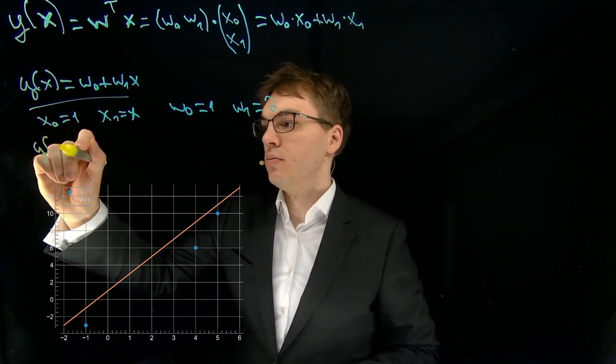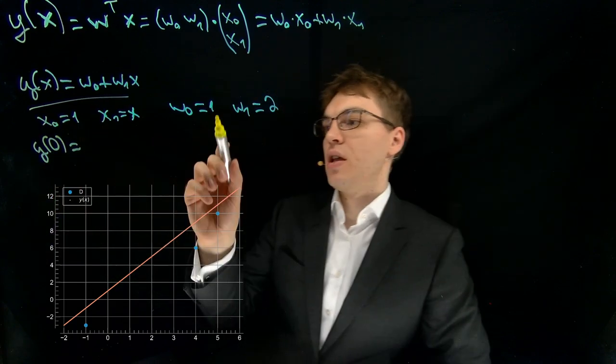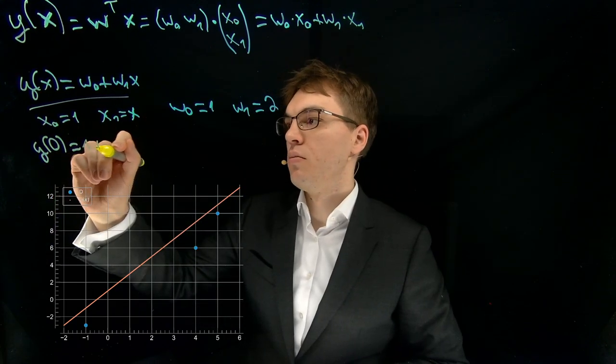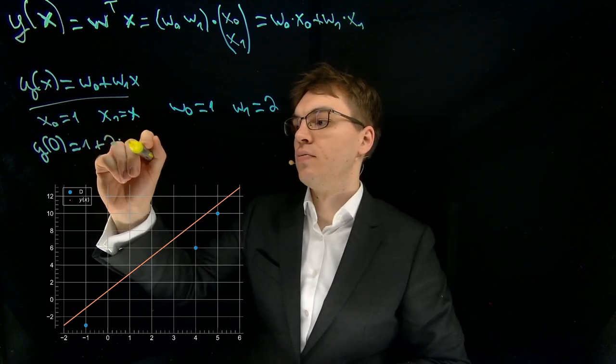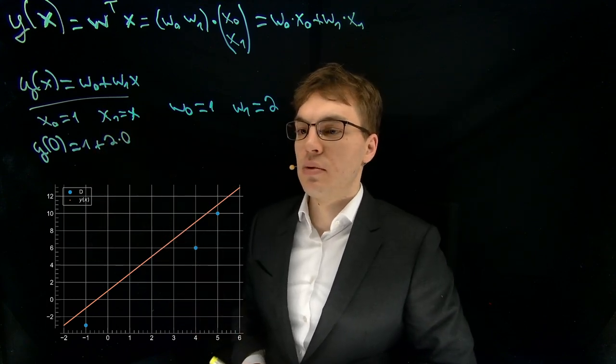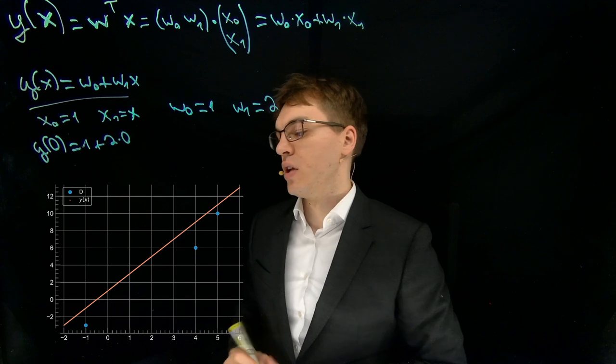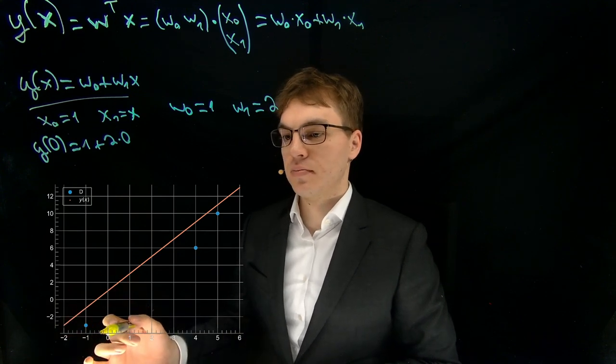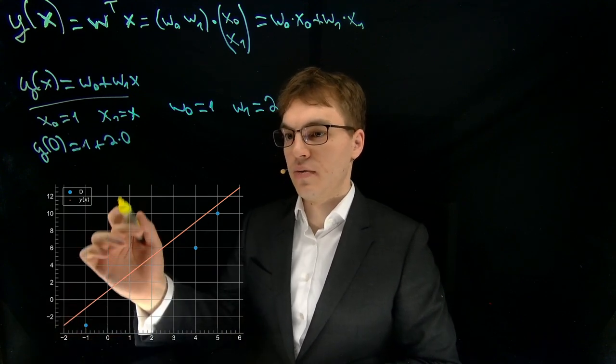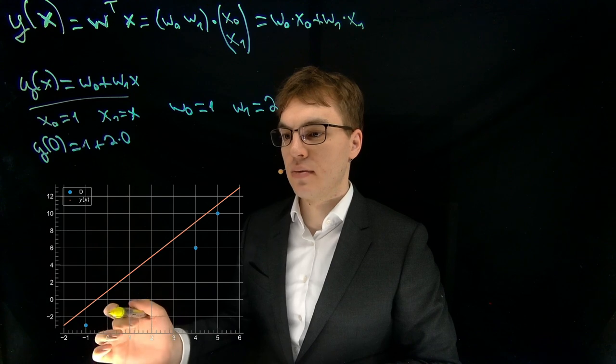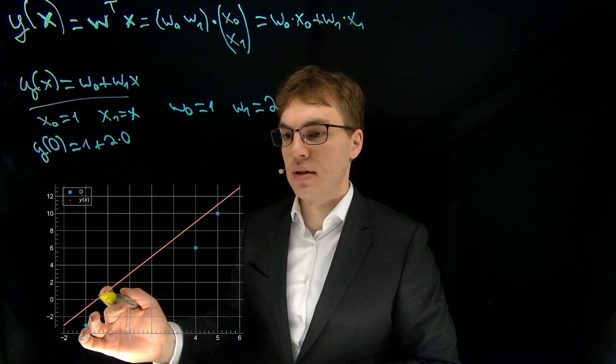y of 0 equals, and now we get 1 plus 2 times 0. So what we get here is a value of 1. So let's look here. We are finding the value on this axis over here, and this is in fact the value at this position.